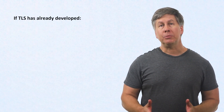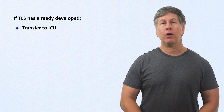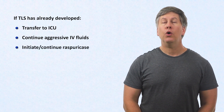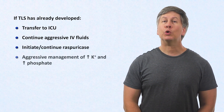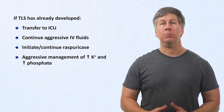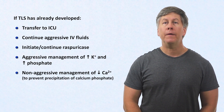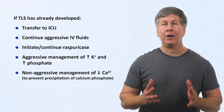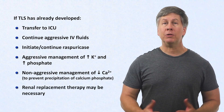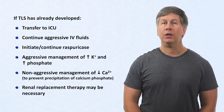Once TLS has already developed, patients are at high risk of developing complications, necessitating preemptive transfer to the ICU if they aren't there already. Continue aggressive IV fluids if the kidneys can handle them. Initiate or continue rasburicase. Aggressive management of hyperkalemia and hyperphosphatemia is required. However, when it comes to calcium, do not treat asymptomatic hypocalcemia. Even with mildly symptomatic hypocalcemia, you may want to hold off on treatment until concurrent hyperphosphatemia is treated in order to limit the precipitation of calcium phosphate. Renal replacement therapy may be necessary, and when initiated early when indicated, most patients experience complete recovery of renal function.